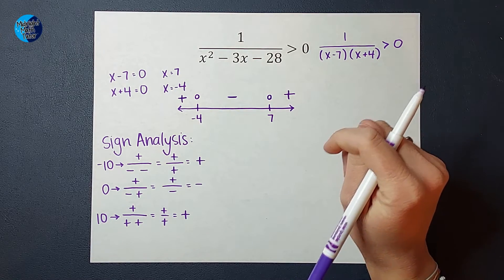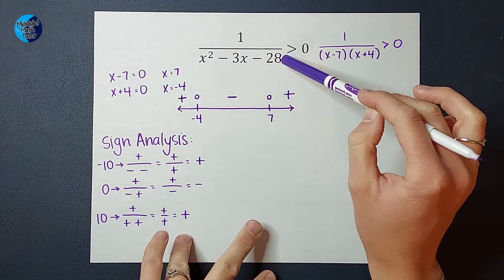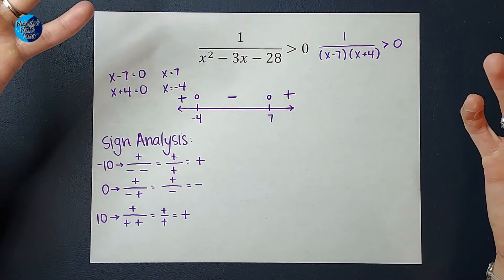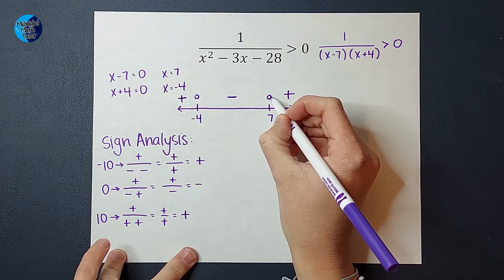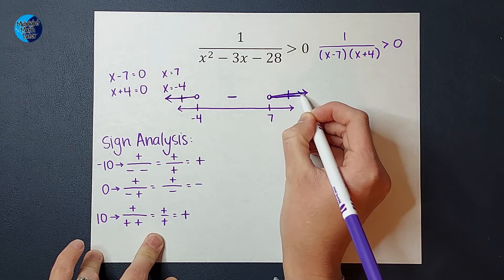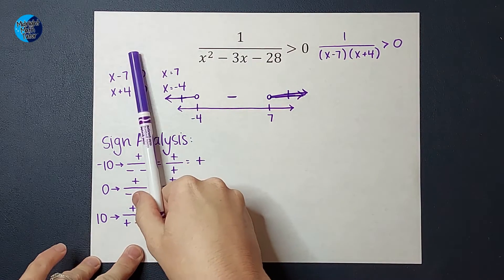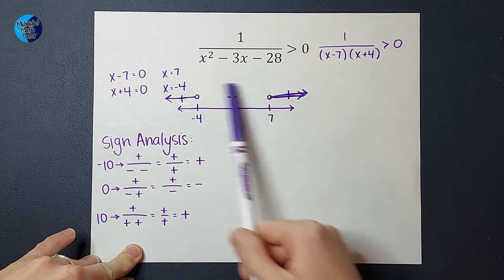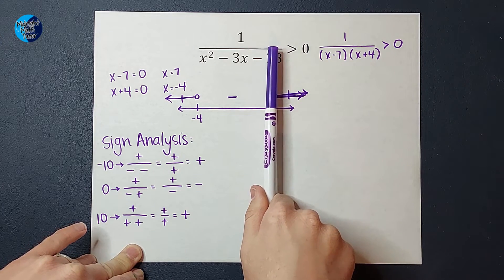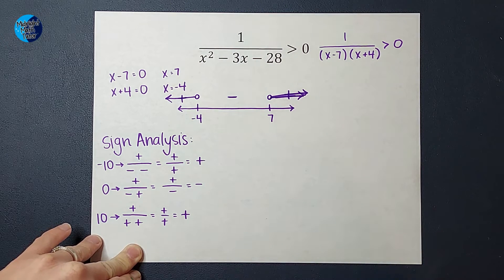Now what? To know where we go from here, we are going to look back at our problem. Remember, originally we were just wondering where is this greater than zero? Well, what types of numbers are greater than zero? Positive numbers, right? So I am going to shade in my positive regions. This means you pick any number less than negative four, plug it in for X, and it'll make this statement true — you'll end up with a number greater than zero. Same with any number larger than seven, you plug it in for X and it'll make this statement true.